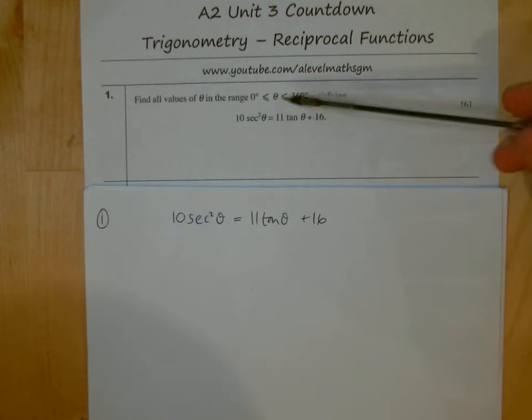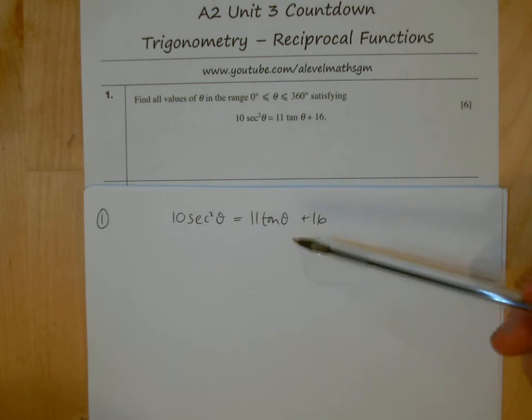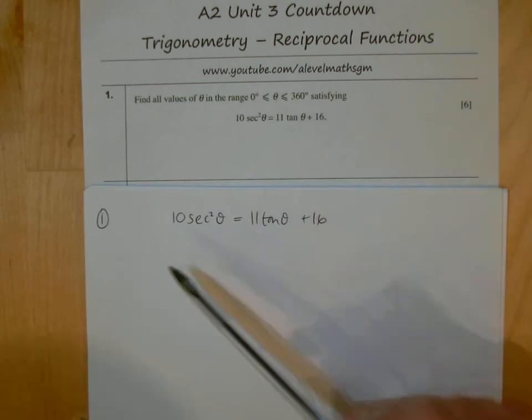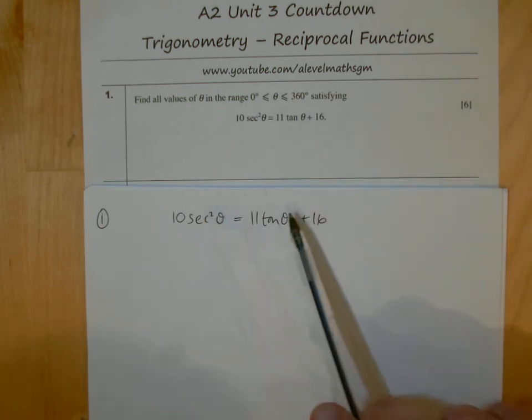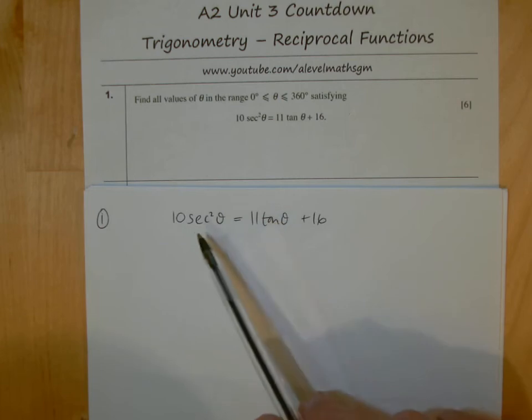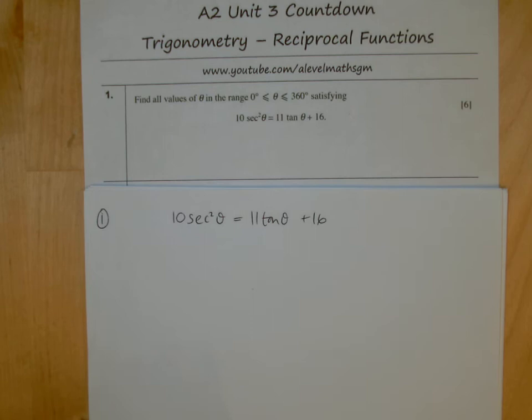Okay, so we've got to solve a trigonometrical equation between 0 and 360. What you need to see here is the difficulty: we've got different functions, a tan function and a sec function.